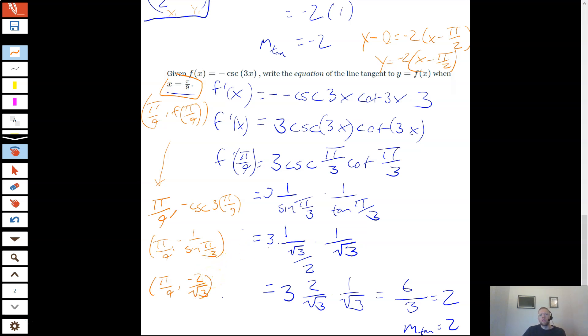And then I'm going to use point slope form again. So see, like, this is my point. See how point slope form is going to save me a whole bunch of headache here? So I'm going to say y minus negative 2/√3 equals 2 times (x minus π/9).